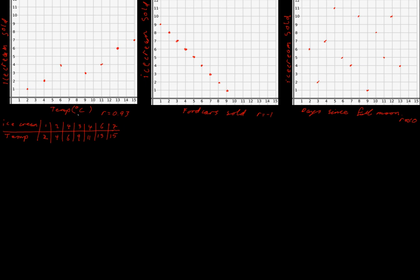Always be careful that you have your axes drawn in and units as clearly labeled as possible. Now the next thing they can ask you about is how strongly correlated some data is. If things are perfectly correlated with each other, that means as one thing changes, the other thing changes by exactly the same amount each time.